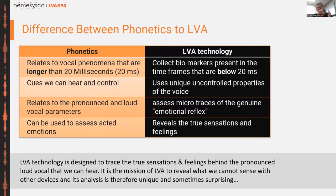We use these leftovers or traces left in the voice from the genuine emotion — emotions that arose through different topics — to reveal true sensations and feelings, even though they are suppressed in our tone of voice. For example, in a business negotiation, if someone offers me a million dollars when I only wanted half a million, I'm very excited but I don't want them to know. So instead of reacting openly, I say, 'Let me think about it.' These are the differences between phonetics and LVA — the pronounced versus unpronounced elements of the voice.